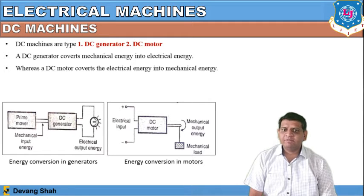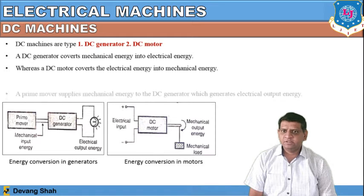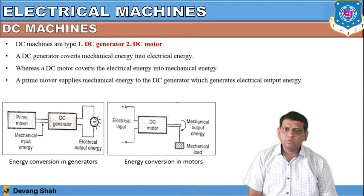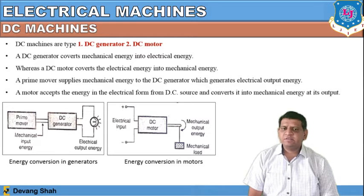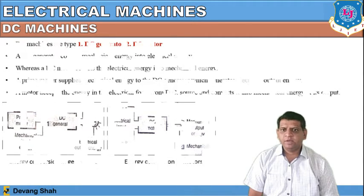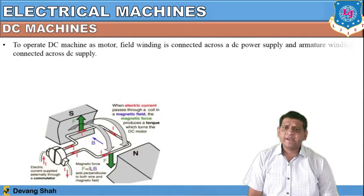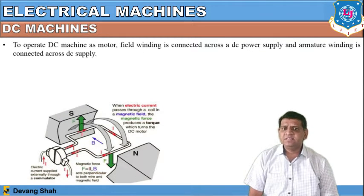Whereas the DC motor converts electrical energy into mechanical energy. Electrical energy is applied to the DC motor and that is converted into mechanical energy. The prime movers are used to generate DC energy. Similarly, the motor accepts energy in electrical form from a DC source and converts it into mechanical energy output. So a DC generator takes input as mechanical and converts it into electrical, while a DC motor takes input as electrical and converts it into mechanical.